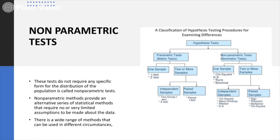The basic difference between parametric and non-parametric tests is that in parametric tests we deal with specific numbers and specific values, whereas in non-parametric tests we deal with data that has certain characteristics but no specified exact numbers. Even if numbers are present, they may be in arbitrary forms and the data is non-homogeneous. Non-parametric tests do not require any specific form for the distribution of the population, and therefore they are known as non-parametric tests.